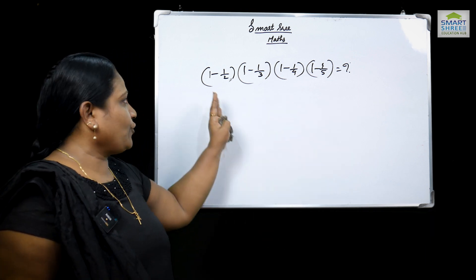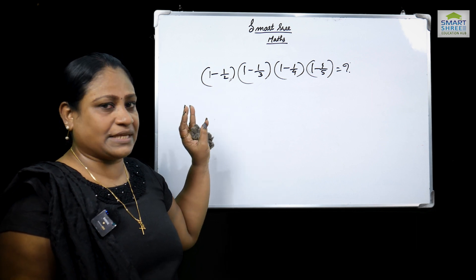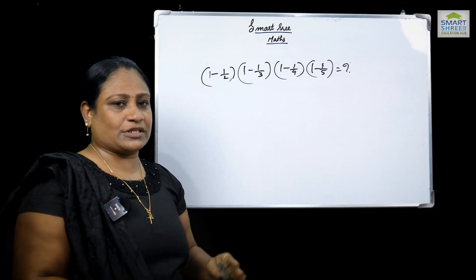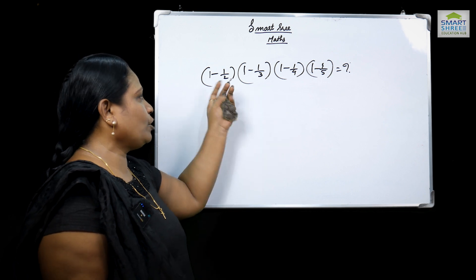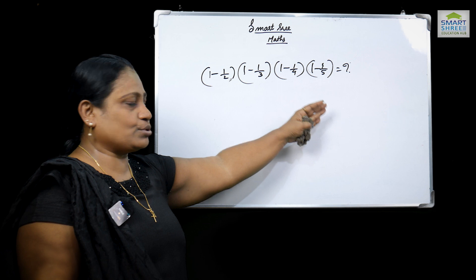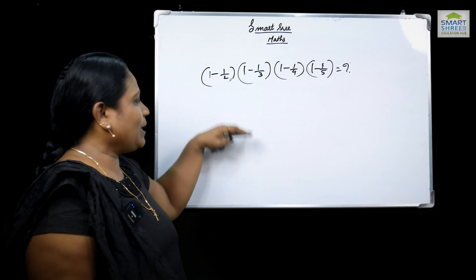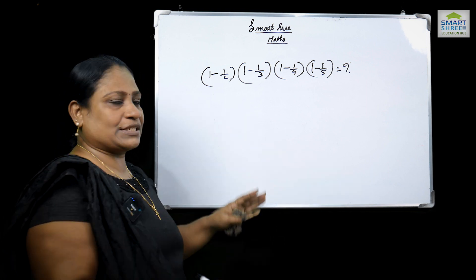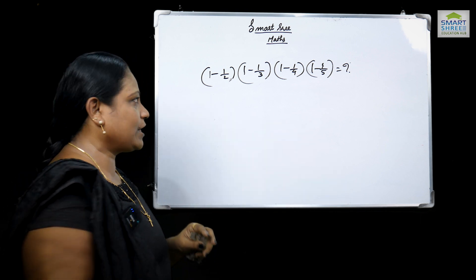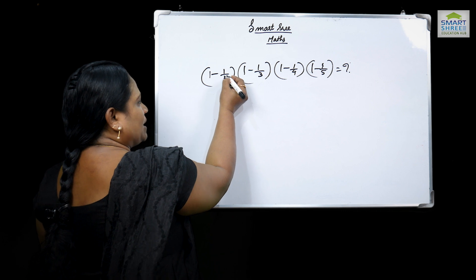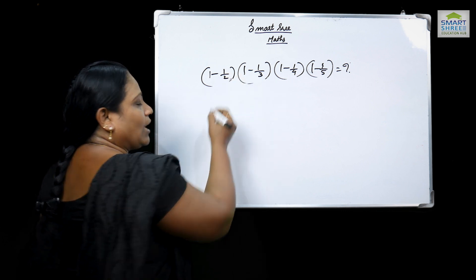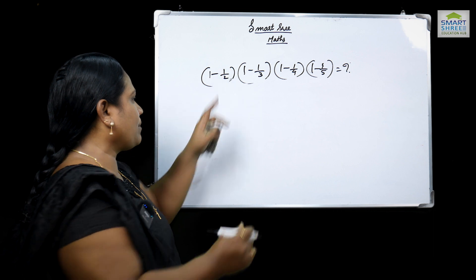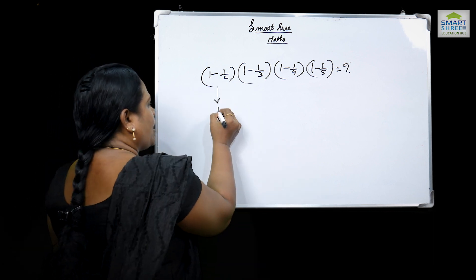Now let's take a couple of steps. If you are doing either the LCM method or cross multiplication method, do that again. Instead, without any calculation, we try to solve it in two steps. For 1 minus 1 by 2, the denominator is 2. We subtract the numerator: 2 minus 1 over 2 gives 1 by 2. So the bracket 1 minus 1 by 2 equals 1 by 2.